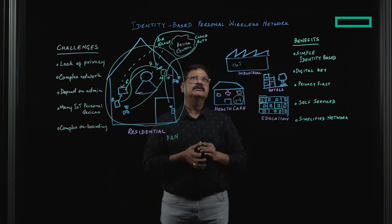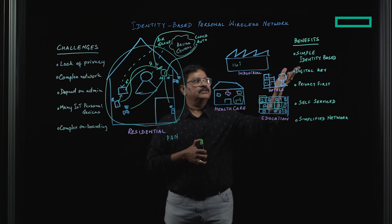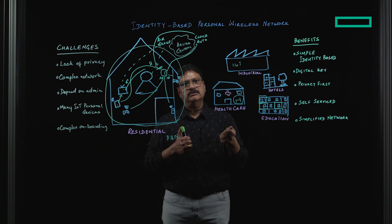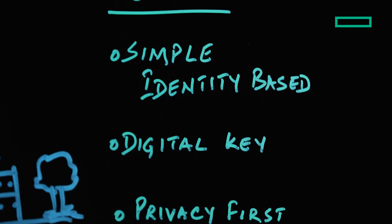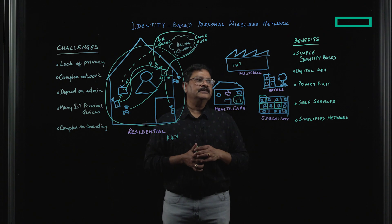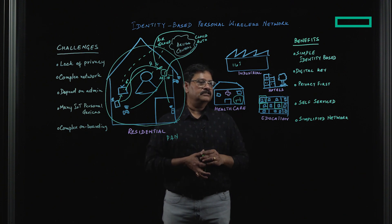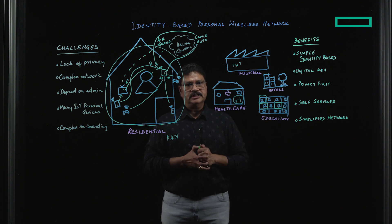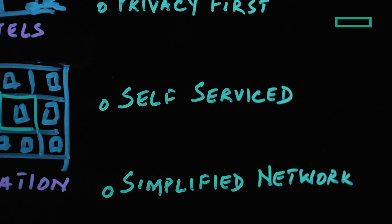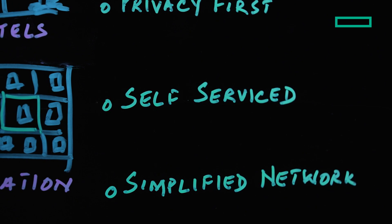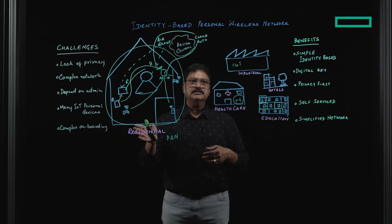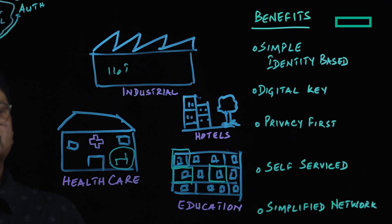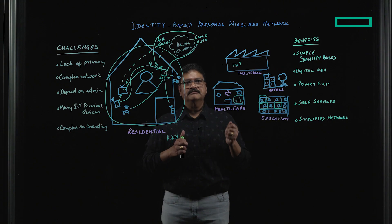Based on this identity-based personal wireless network, you get a simplified identity-based experience. All you do is give your username and you get a simple token to onboard as a digital key. It is privacy-first because you don't have to go talk to anybody — it's simply based on your identity that you get onboarded. You don't have to go to the administrator for onboarding your device; you just use your key. And you don't have to make any changes to your network. This applies to any kind of environment, whether a complex corporate network with many VLANs or a very simple network where you still want privacy.